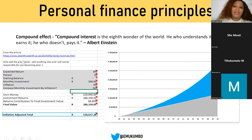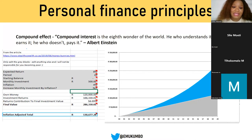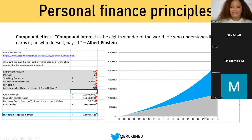Some personal finance principles everyone should know: the compounding effect. If you put away 500 rand monthly over a period of 20 years with an expected return of 8% and inflation of 4%, your 500 rand monthly investment will now be worth 286,000 rand in the long run. Money compounds over time — the gray part of the graph is what you essentially put in, and the blue part is the growth on your initial investment over a 20-year period.